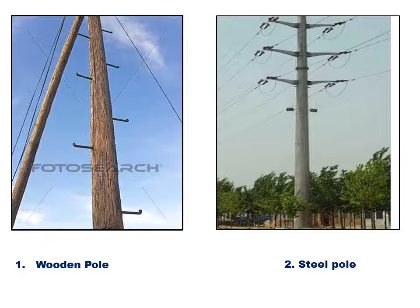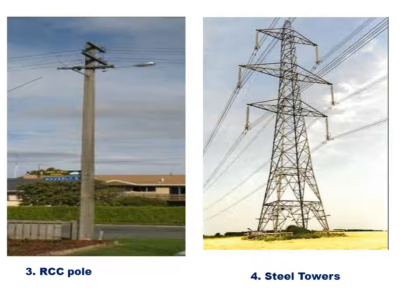The steel tower is made of cement concrete and is used for transmission purposes at high voltage. As you can see in the image, on both sides there are 3+3 conductors — that is a double circuit. The double circuit tower has conductors on both sides.